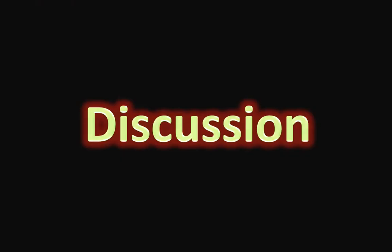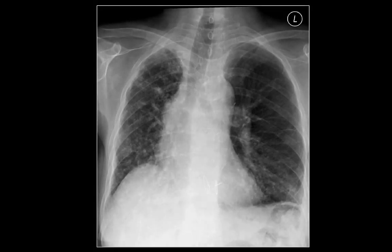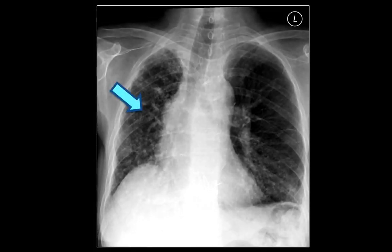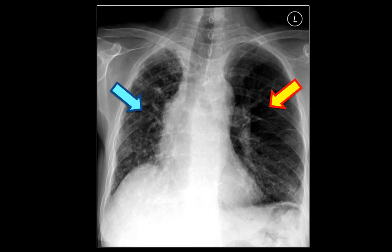Let's go to the findings and discussion. You probably have noticed that the right lung is smaller in volume compared to the left lung. The right lung shows a diffuse reticular opacity with no clear predominance in the upper versus lower zones. Comparing that to the left lung, the left lung looks hyperinflated and the cardiomediastinal structures are actually deviated to the right side.